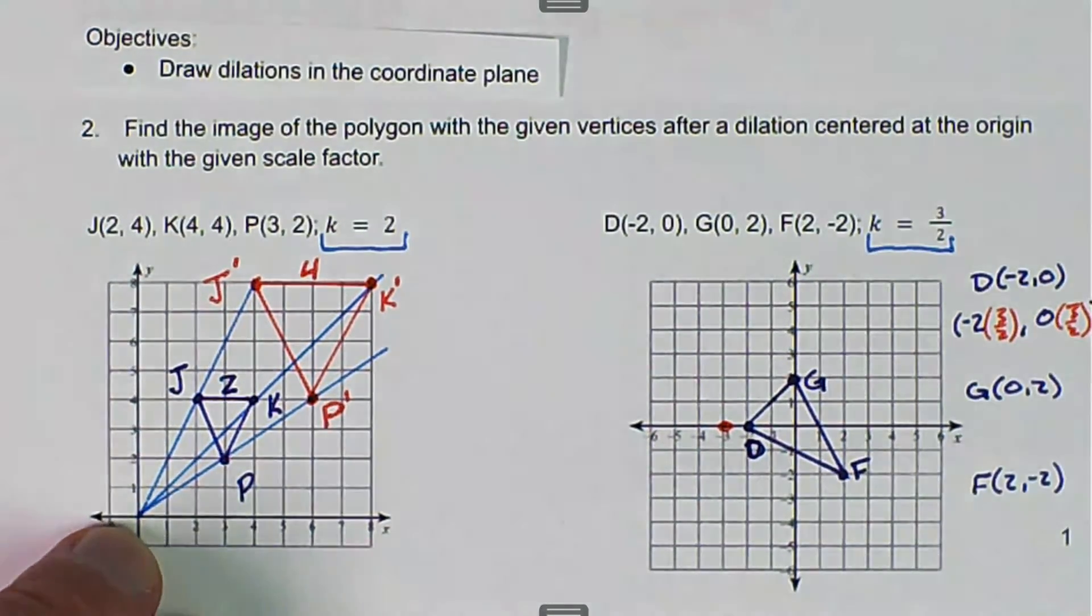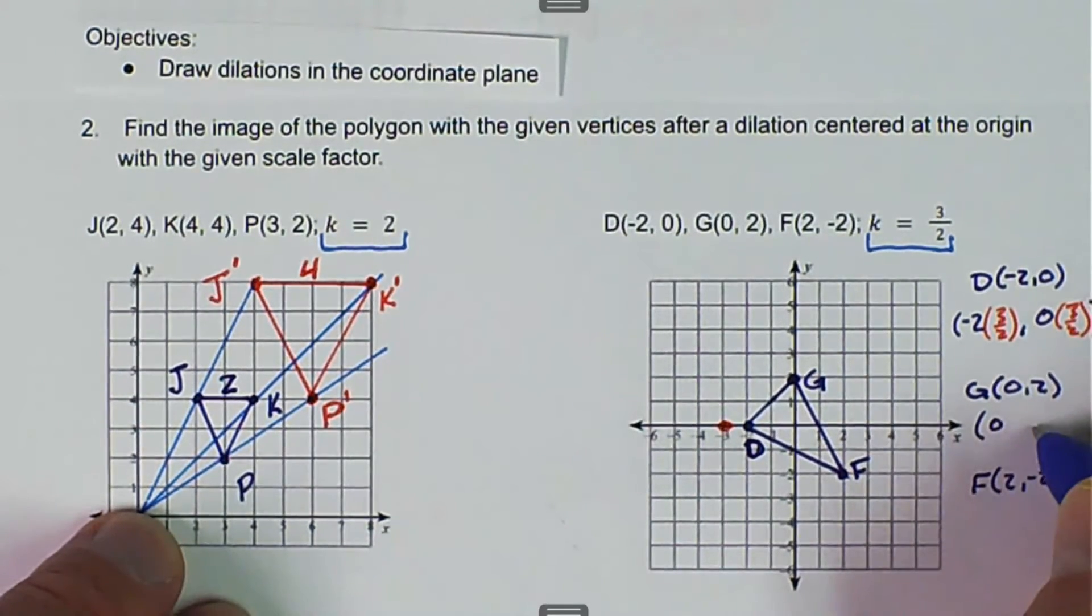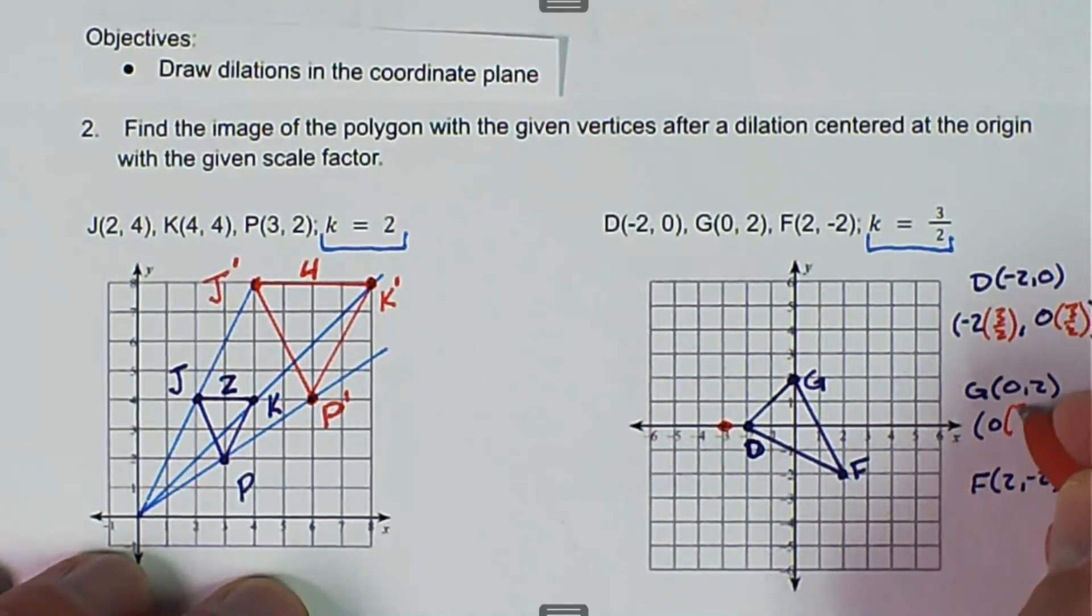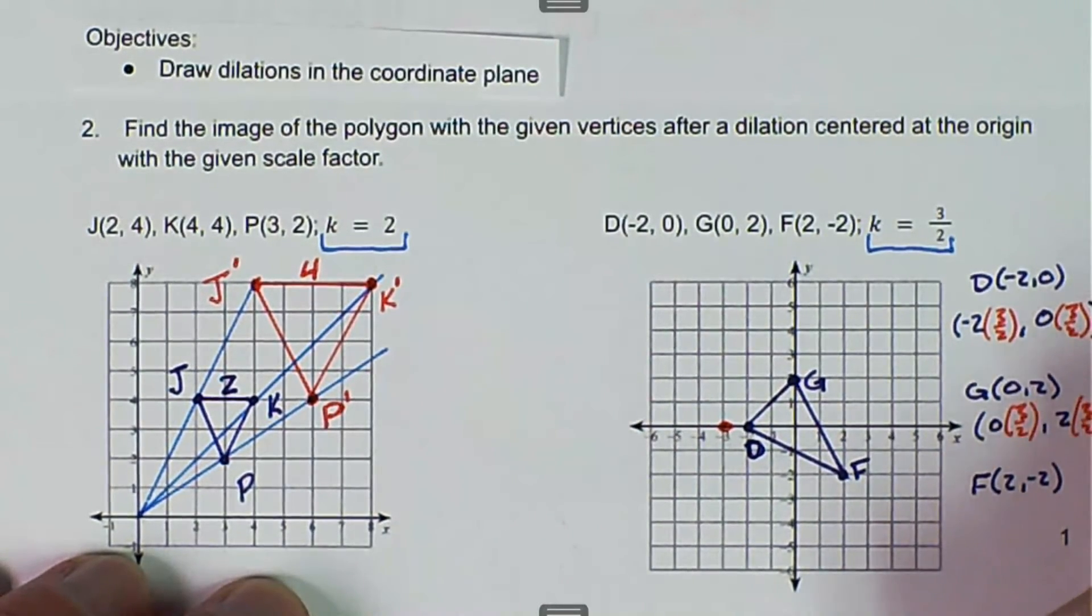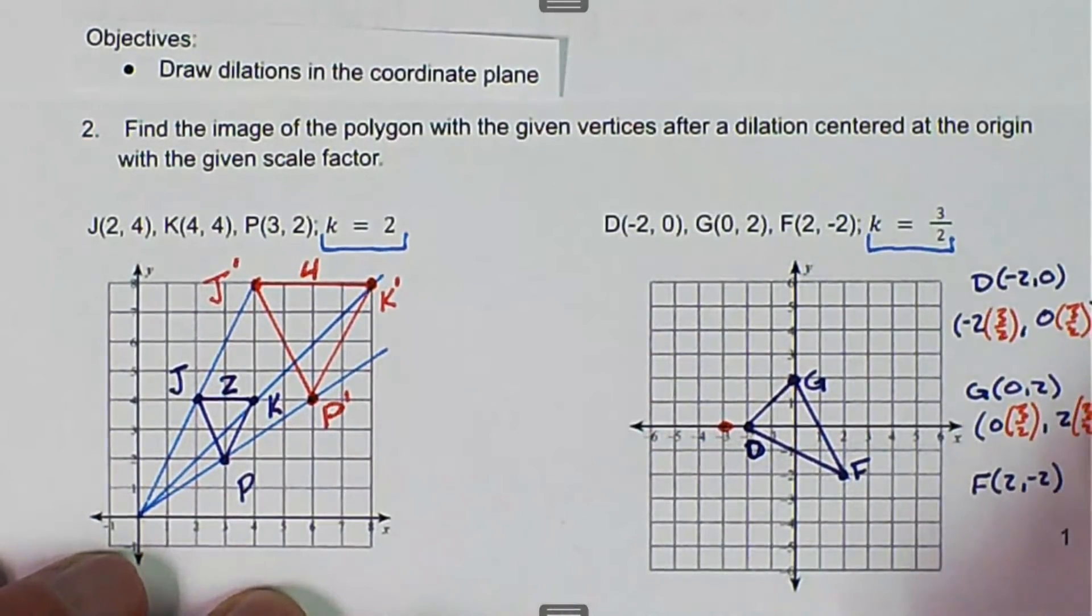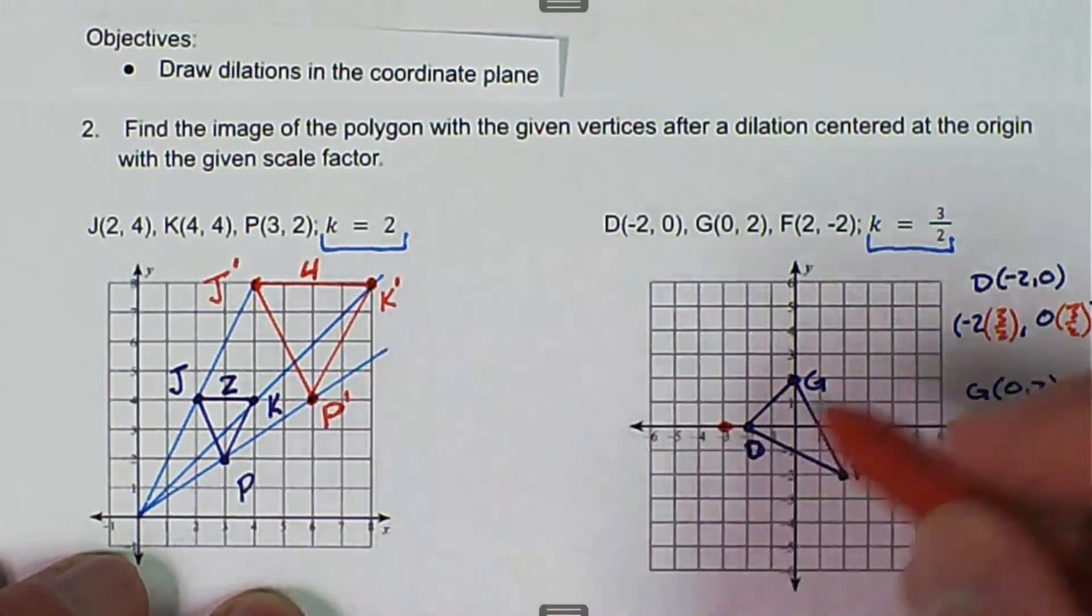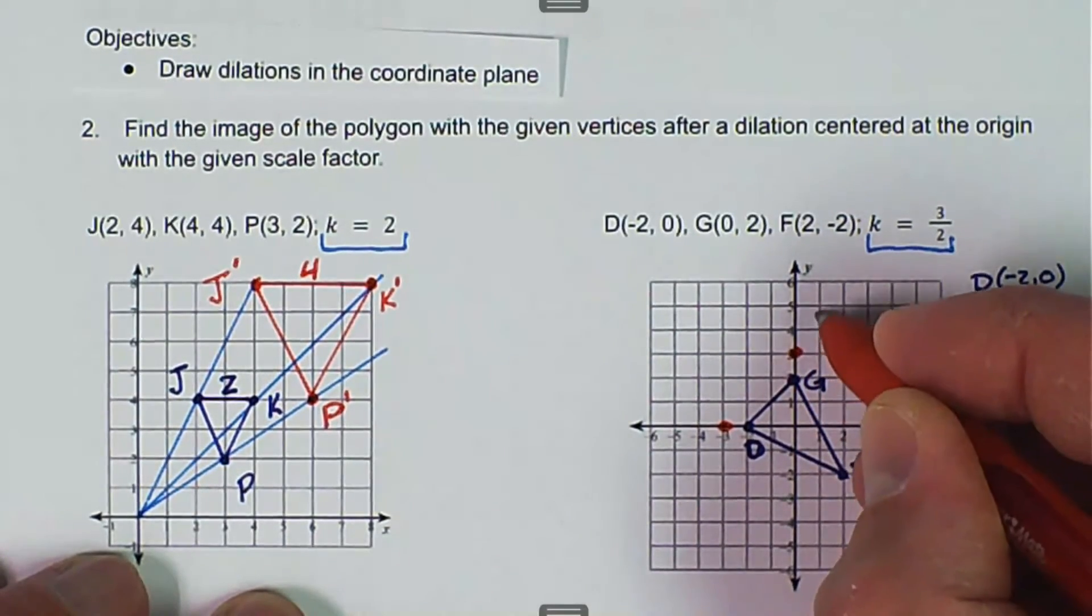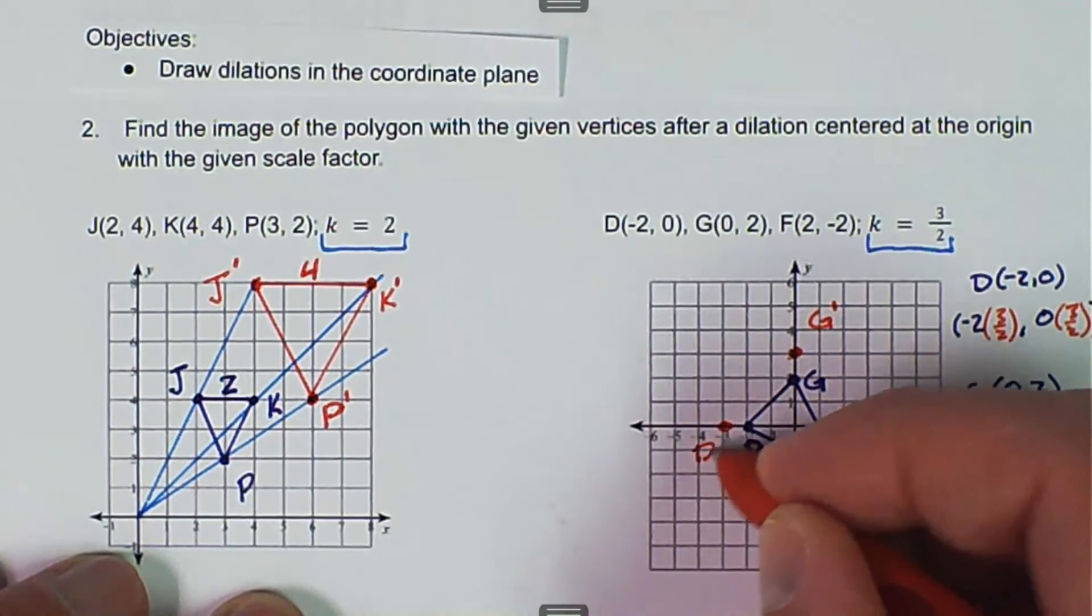And then we get to do the same thing for G. We take the coordinate of X and the coordinate of Y. And we multiply them both by 3 over 2. Again, 0 times anything is 0. And the 2's cancel and we're left with just 3. So we have 0, 3. And that's going to be G prime. This was D prime.